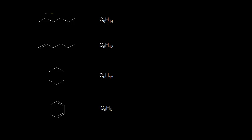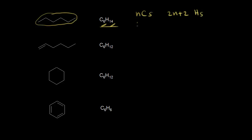Let's start off by looking at hexane, with a molecular formula of C6H14. We say that hexane is completely saturated with hydrogen, so it has the maximum number of hydrogen atoms possible for the number of carbons. When talking about alkanes with N carbons, you get 2N plus two hydrogens. Here N is equal to six, so two times six plus two gives us 14 hydrogens.